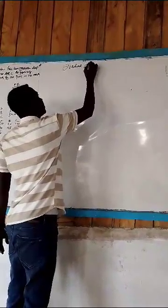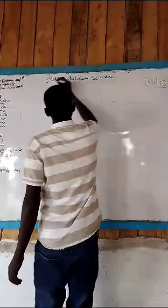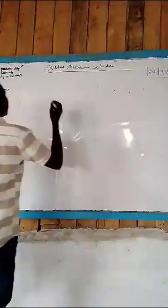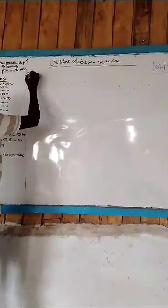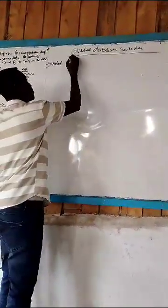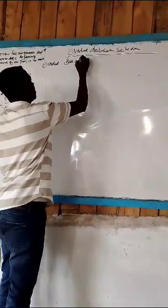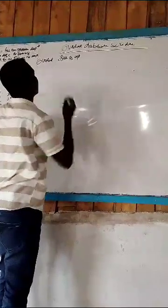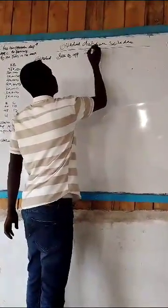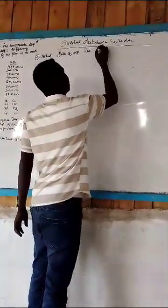Overhead distribution schedule. You will start with a column for overhead, then a column for amount, then a column for ratio, then a column for the amounts allocated to each department.